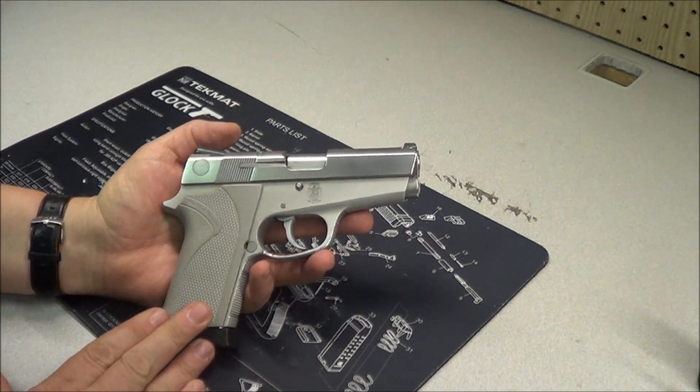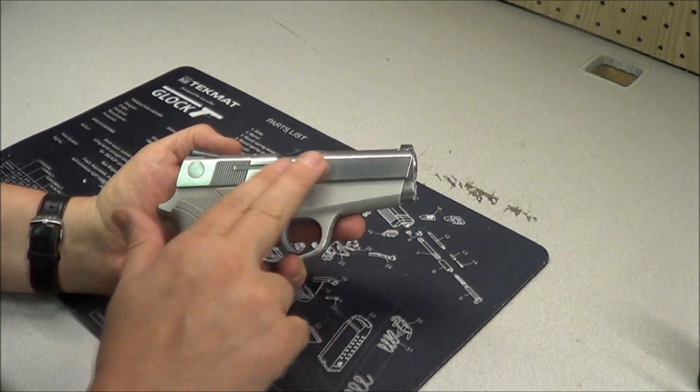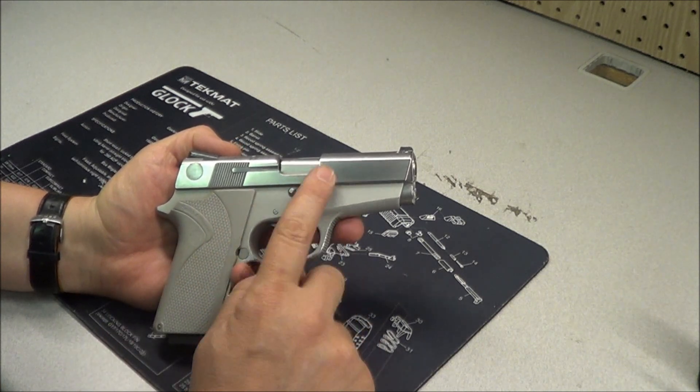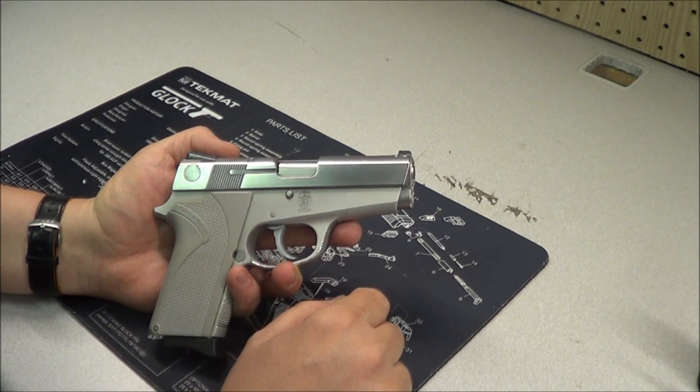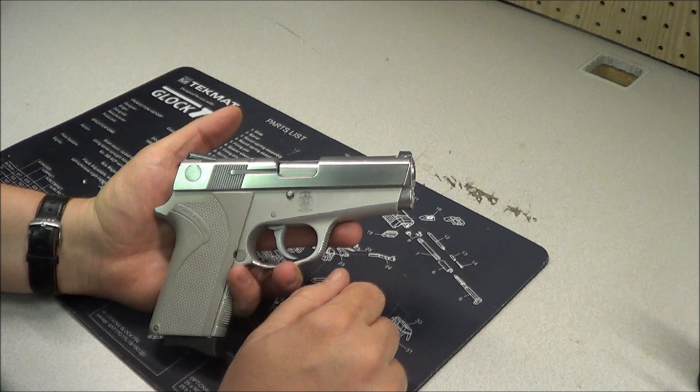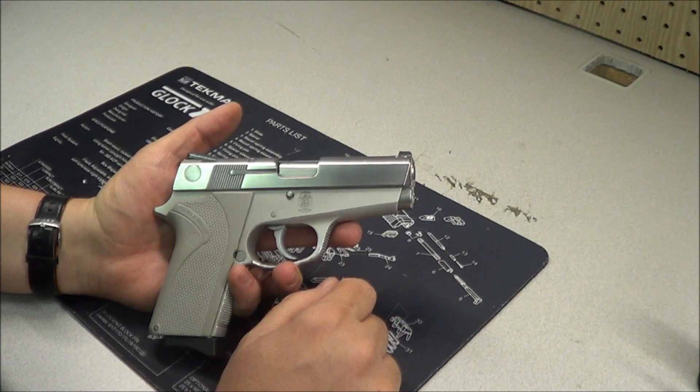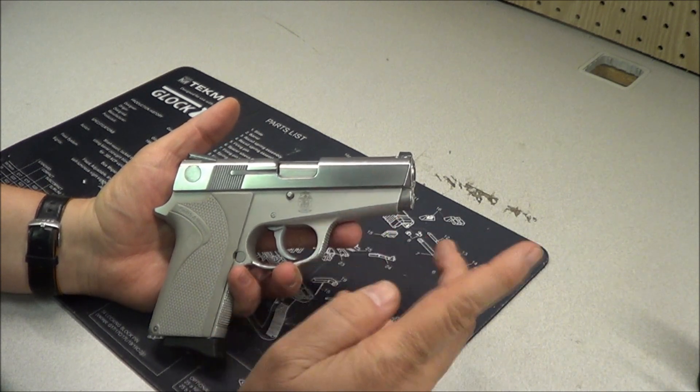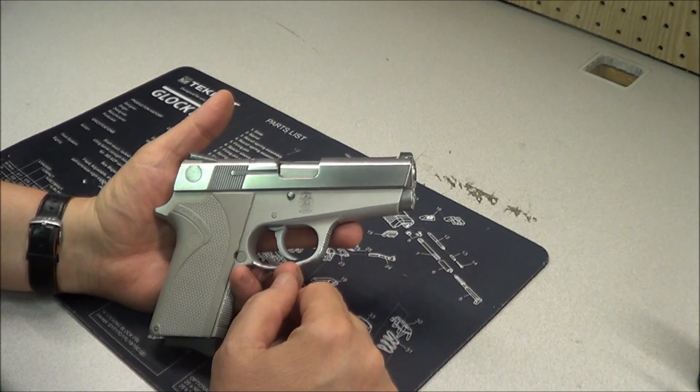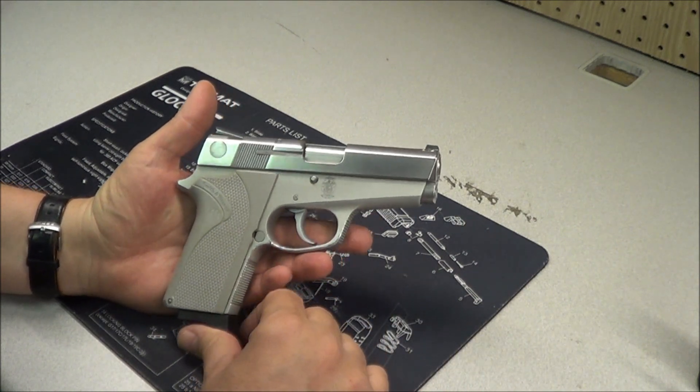The gray grips, stainless steel upper slide, and an aluminum lower. But it said Ladysmith on the side of the slide here. And after that they came out with the 3913 NL, which has stood for either new look or, as my wife calls it, the non-Ladysmith model.